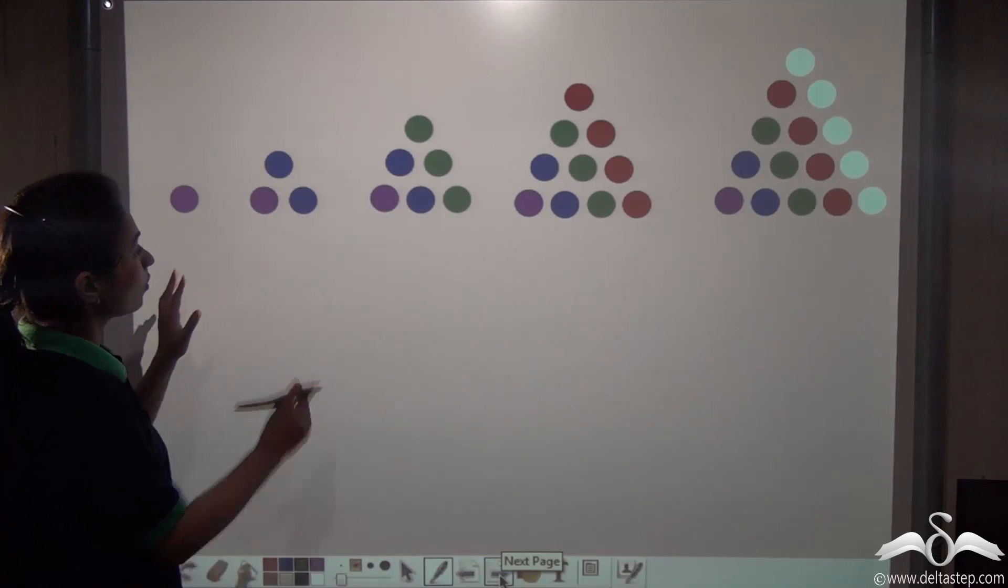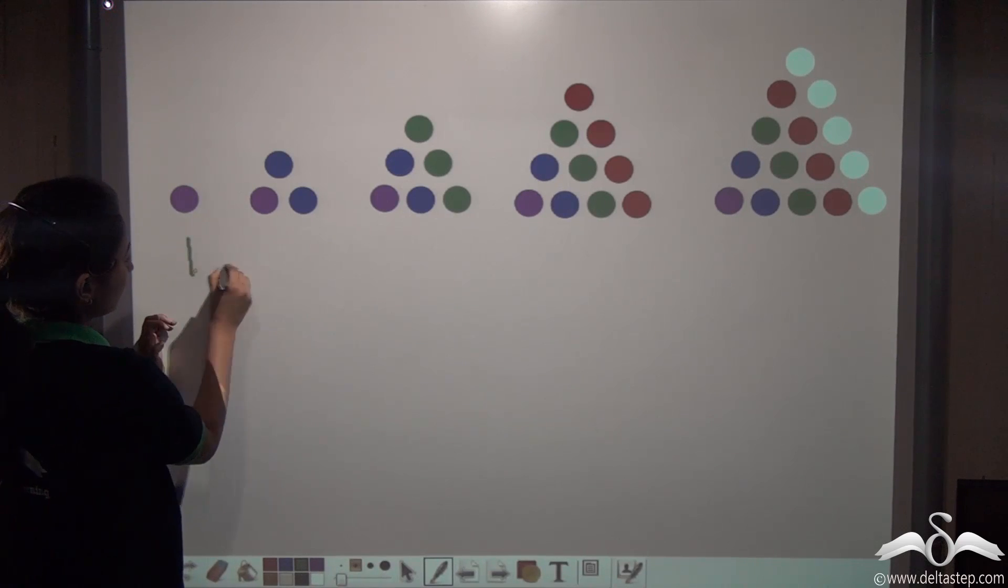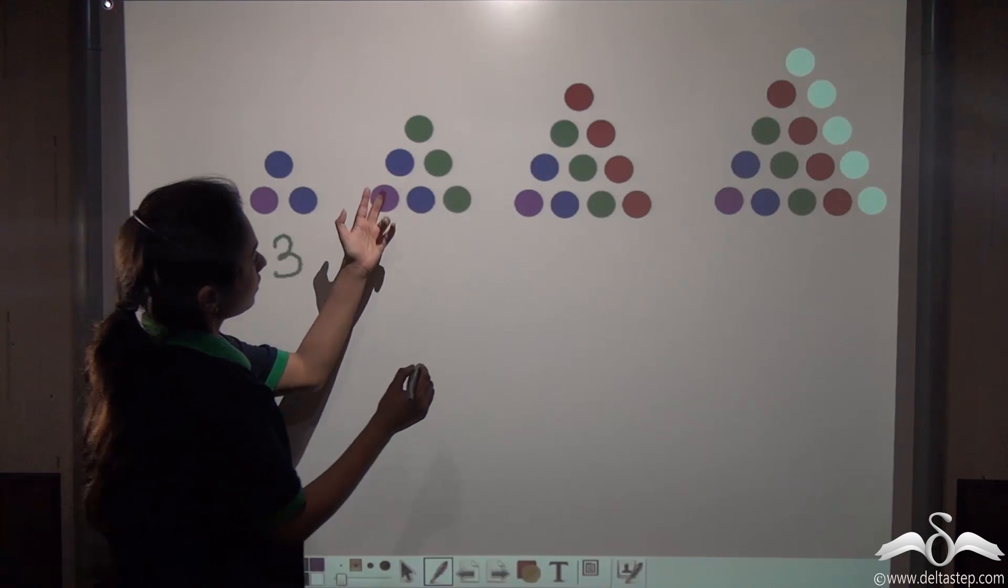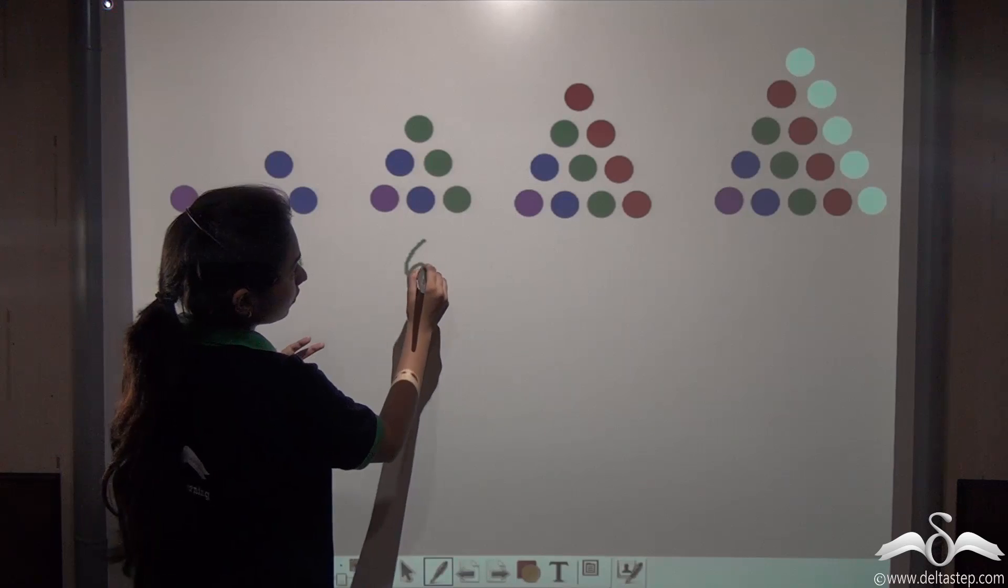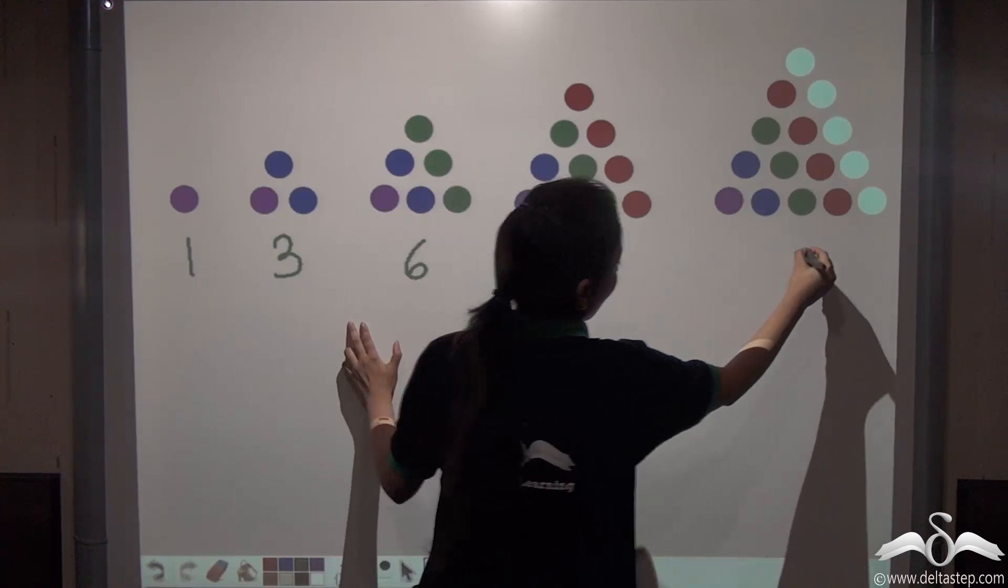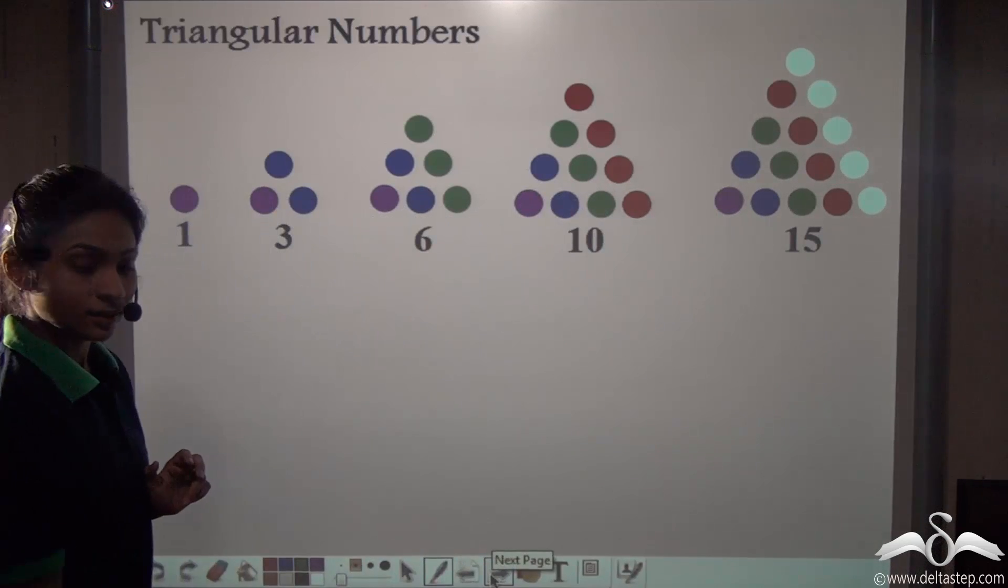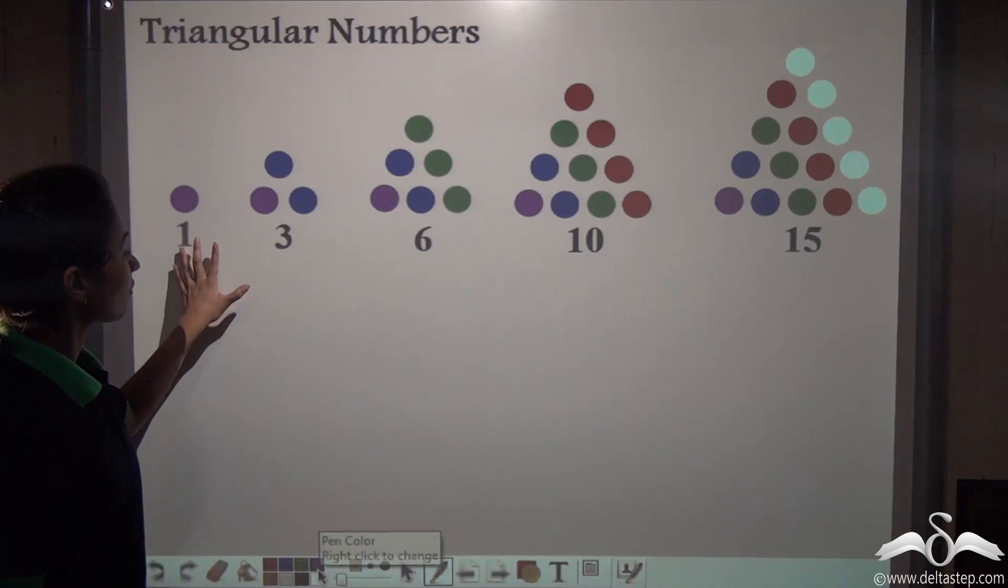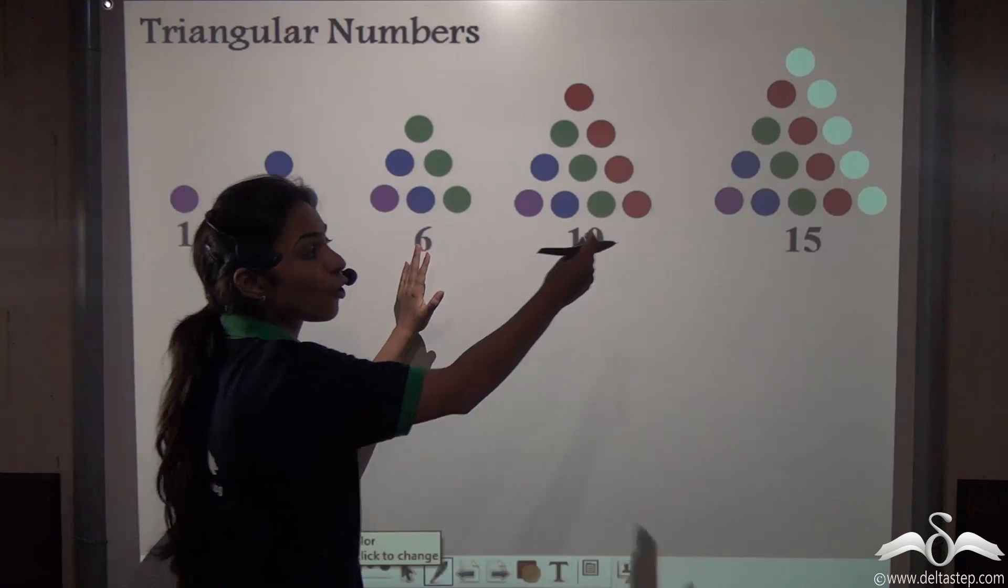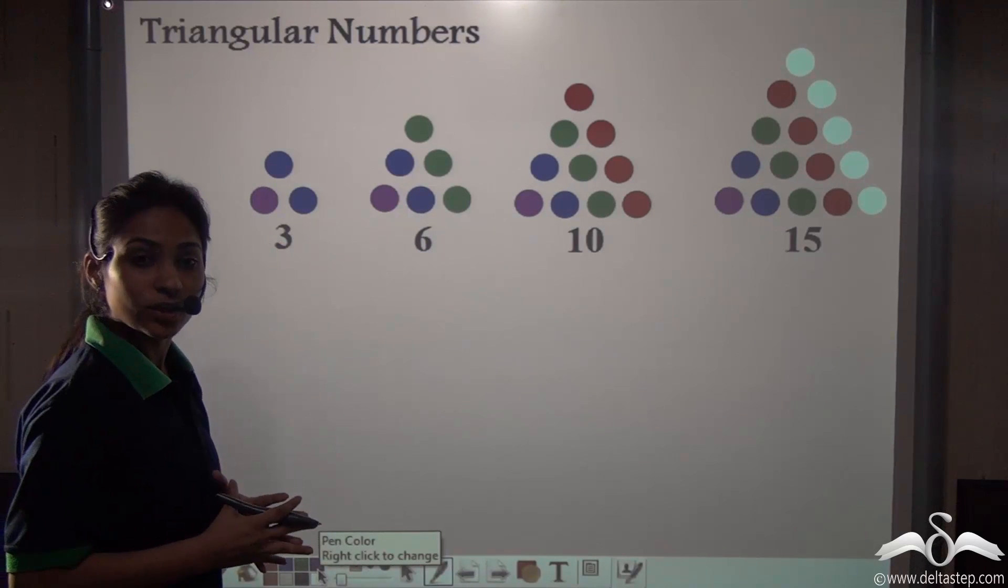Now let us count these and write down. One, three, six, then we have ten, then we have fifteen. Well, these are called triangular numbers. This can go on increasing. Here we have taken the first five triangular numbers.